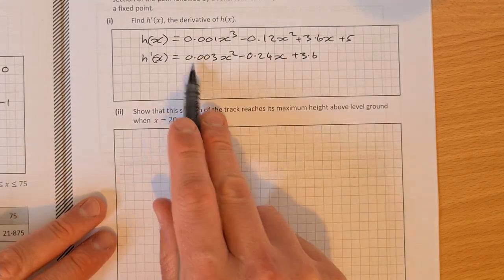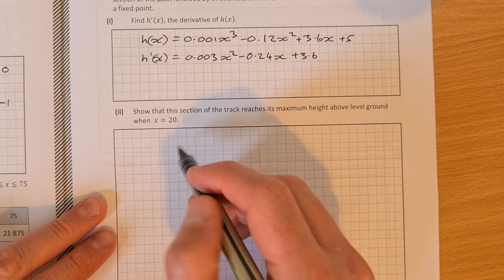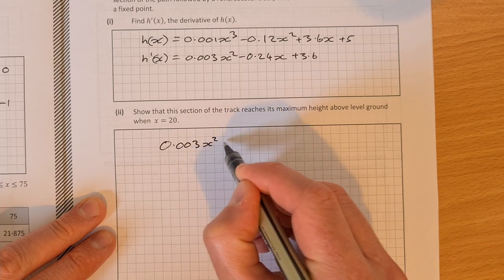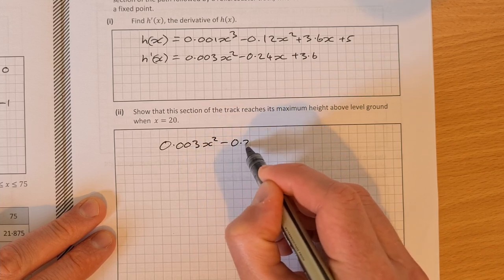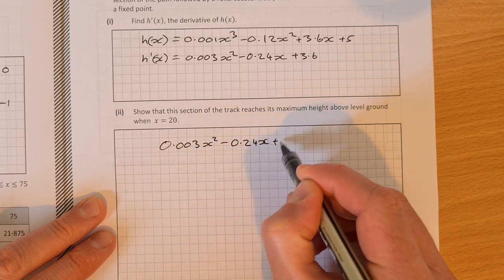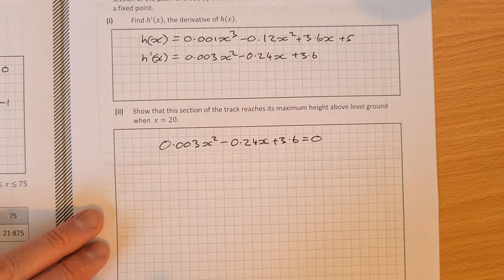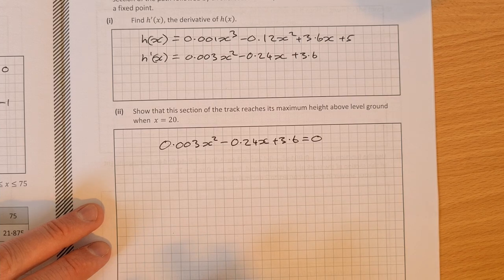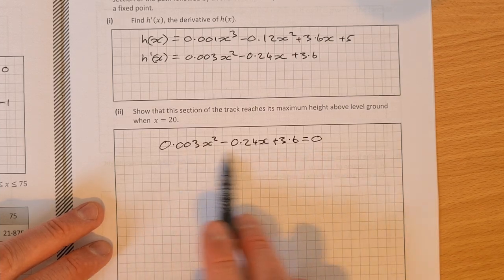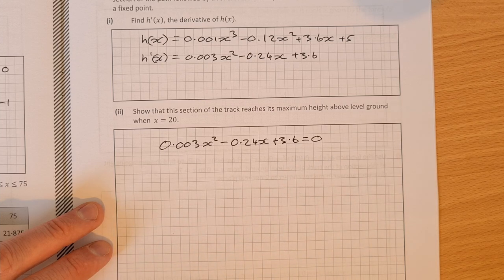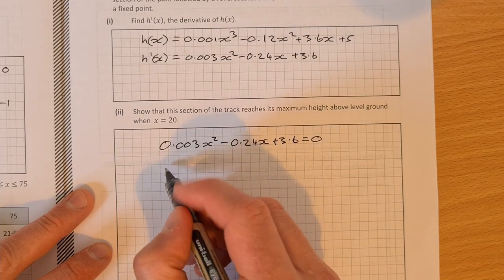So to do this, what we do is we let the derivative equal to 0. So let this here equal to 0.003x squared minus 0.24x plus 3.6 is equal to 0. You can go ahead and use the minus B formula or you can maybe multiply by 1000 and see if you can factorize it then. That might be fine. You might be able to simplify it as well. But I'm just going to use the minus B formula.